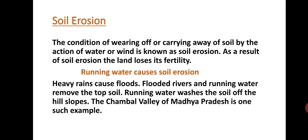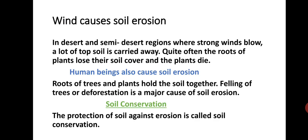Running water causes soil erosion. Heavy rains cause floods. Flooded rivers and running water remove the topsoil. Running water washes the soil off the hill slopes. The Chambal Valley of Madhya Pradesh is one such example. In desert and semi-desert regions where strong winds blow, a lot of topsoil is carried away. Quite often the roots of plants lose their soil cover and the plants die.